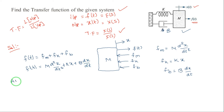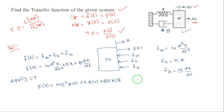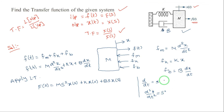Now apply the Laplace transformation to the above equation. All time-domain terms are replaced with S-domain terms: F(s) = M · s² · X(s) + K · X(s) + B · s · X(s). Note that d/dt transforms to s and d²/dt² transforms to s². Taking X(s) as the common term: F(s) = X(s) · (Ms² + Bs + K).